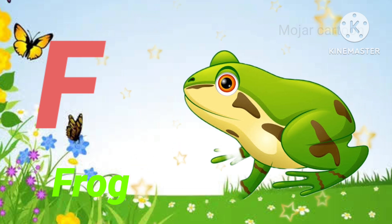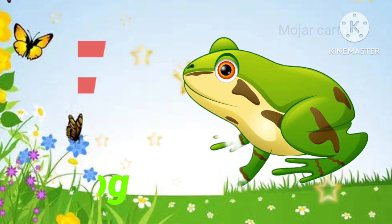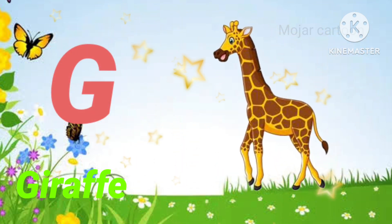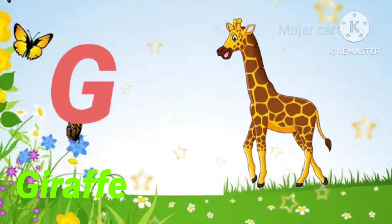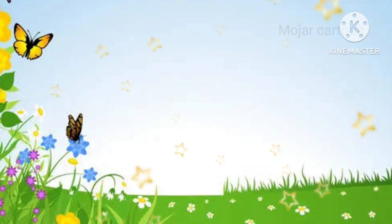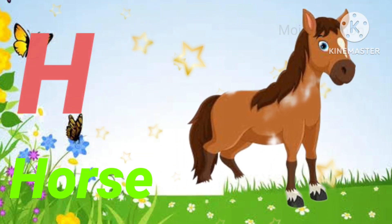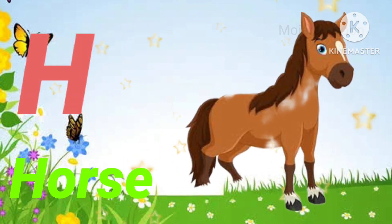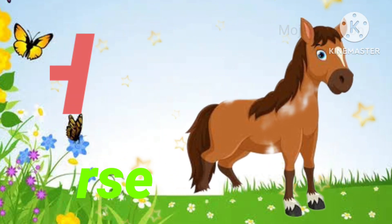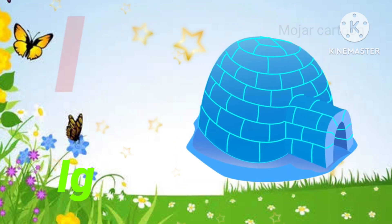F. F is for frog. Z. Z is for zebra. H. H is for horse.